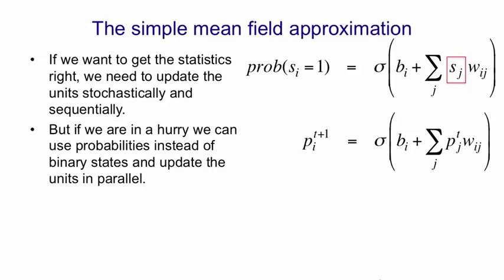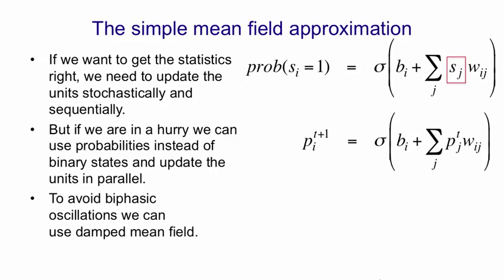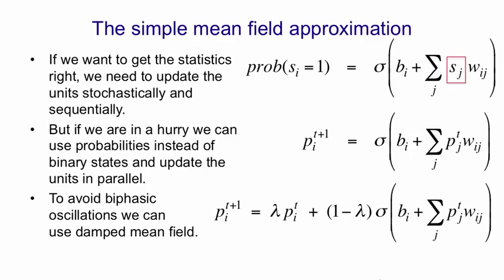However, it works pretty well. It can go wrong by giving us biphasic oscillations because now we're going to be updating everything in parallel. We can normally deal with those by using what's called damped mean field, where we compute pi(t+1) but don't go all the way there — we go to a point in between where we are now and where this update wants us to go. So in damped mean field, we go to lambda times the place we are now plus (1 minus lambda) times the place the update rule tells us to go to, and that will kill oscillations.